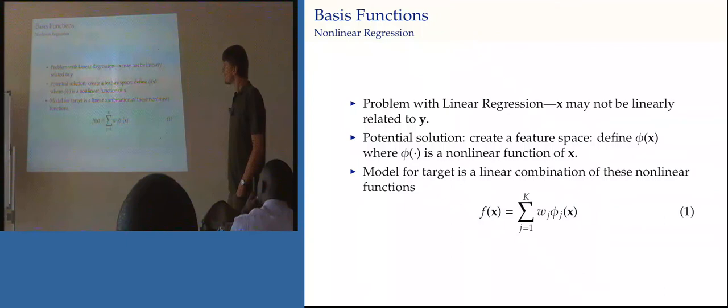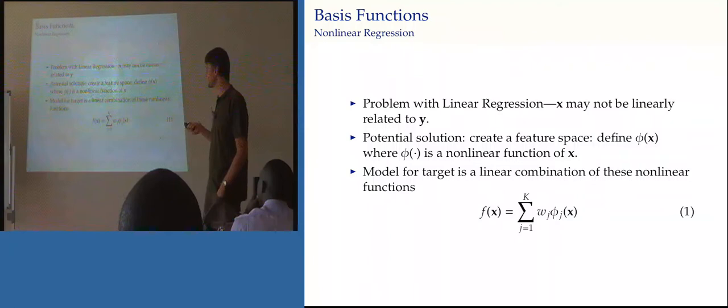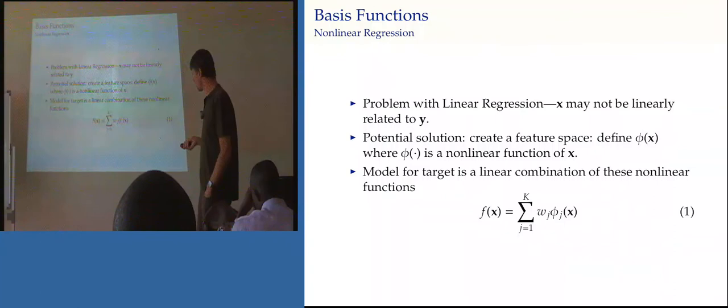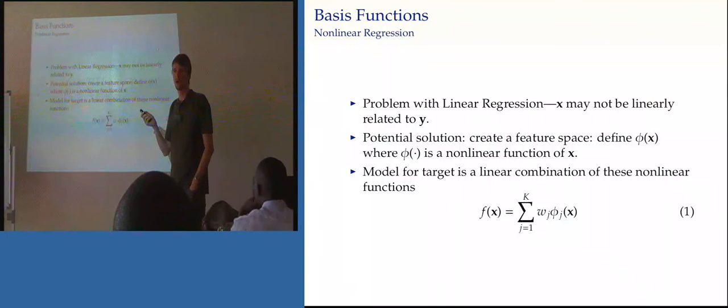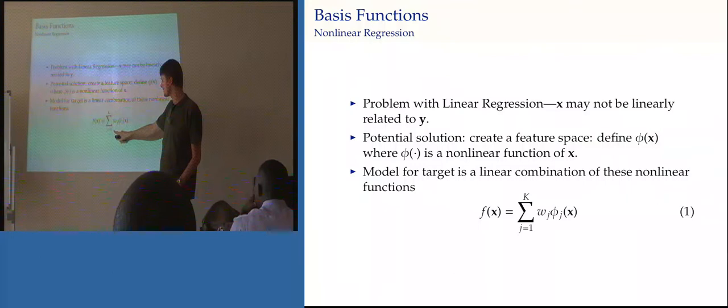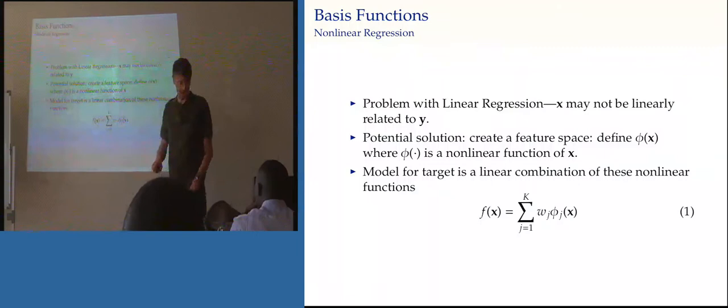We're going to see if we can fix that up today. A solution to making things non-linear is to create what we call a feature space. We define phi of x, where phi is a non-linear function of x. In our previous model we actually had a phi of x with two components. This is the new way of writing the model: F of x equals the sum over some weights W times these basis functions phi_j.